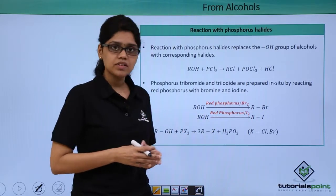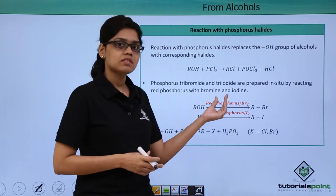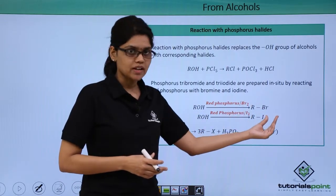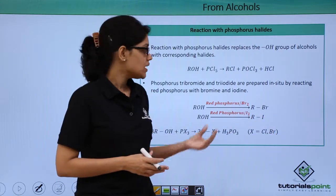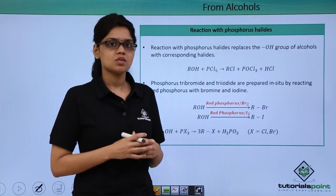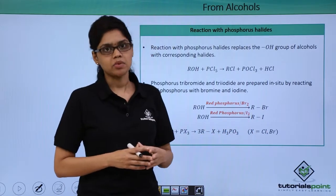As you can see in the reactions given here, when ROH reacts with red phosphorous in the presence of bromine, you can get alkyl bromide RBr. And similarly, reacting red phosphorous with iodine generates PI3 as a reagent in which case you get alkyl iodide as a final product.